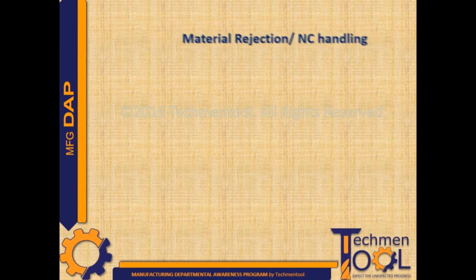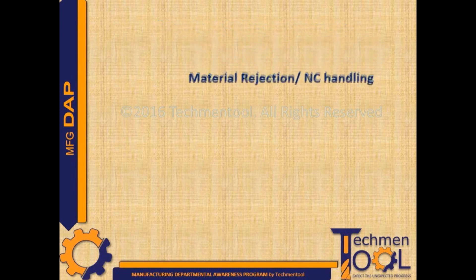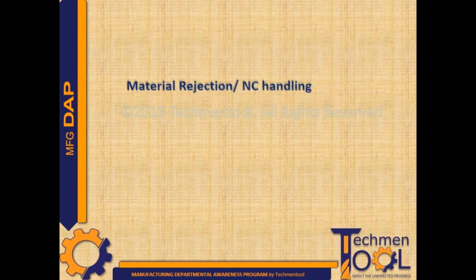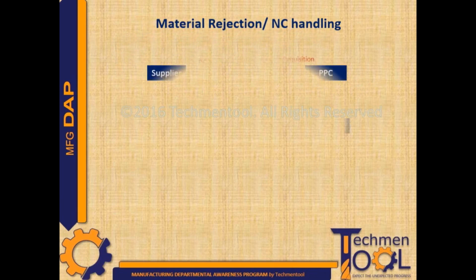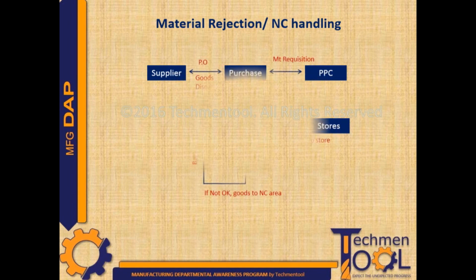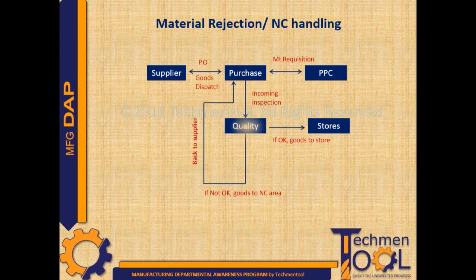Material Rejection or NC Handling is dealing with non-conformance observed during the receipt of goods from the supplier. After proper communication between the purchase department and supplier regarding requirements given by the PPC and terms and conditions, the purchase department will place a P.O. Then the supplier sends goods to the buyer against the P.O.